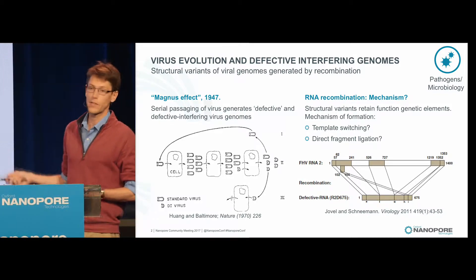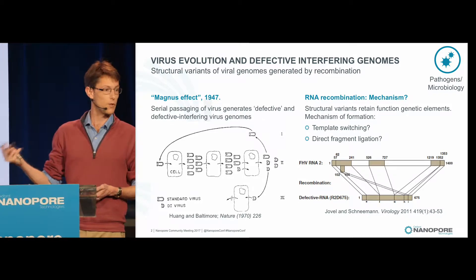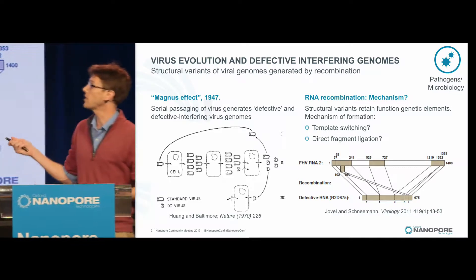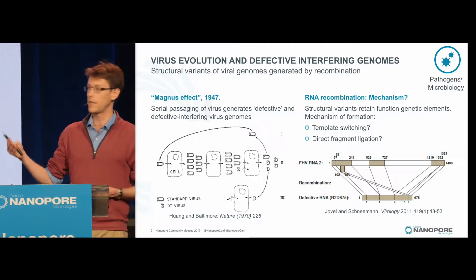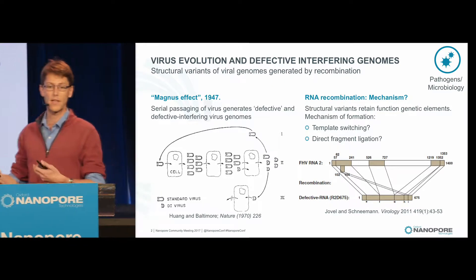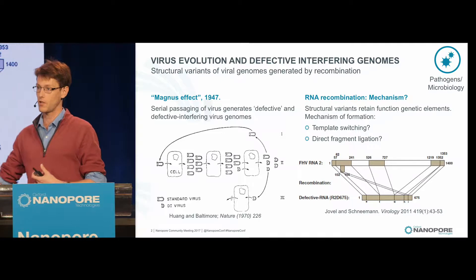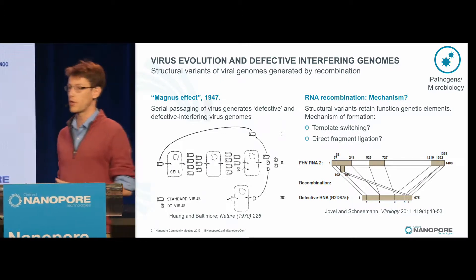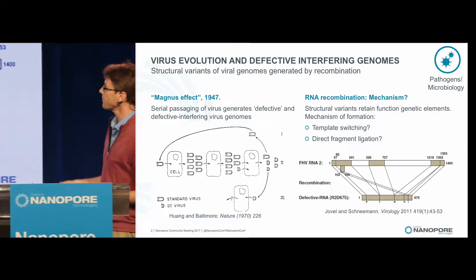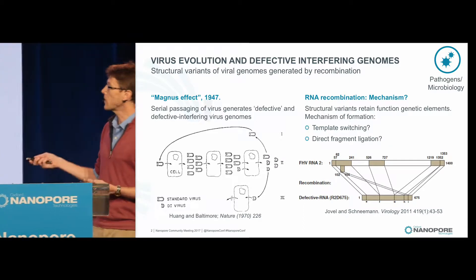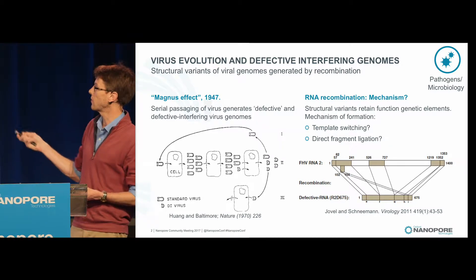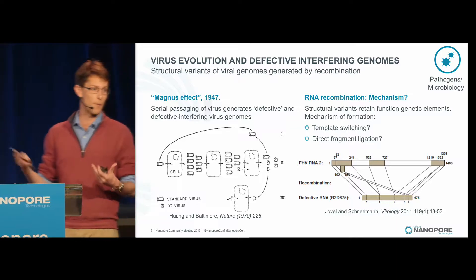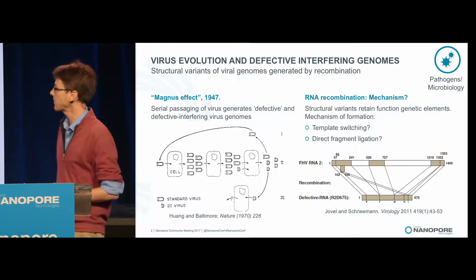These are very interesting because we can start to use them as antiviral therapies or vaccines. Recently it's been emerging that if defective genomes are present in the inoculum a patient is infected with, they might change the outcome of infection or change the host immune response. However, we don't really know how these arise — we know they arise via recombination, but the number of events present in these genomes is very complex.